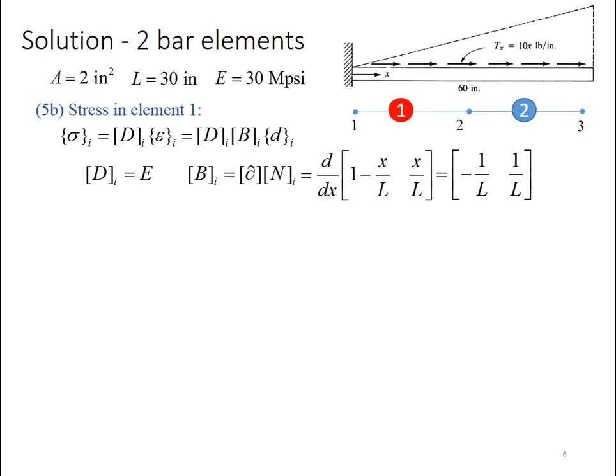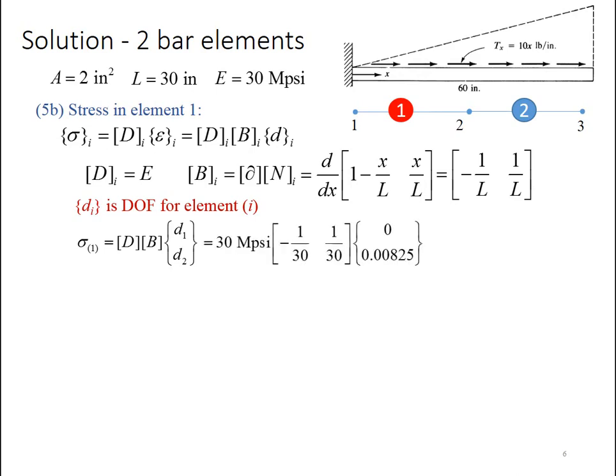Recall here that the d sub i that I'm looking at is the degree of freedom for element i, in this case element 1. We're going to have a different degree of freedom vector for element 2. Specifically, element 2 has degree of freedom 2 and degree of freedom 3 because it deals with node 2 and node 3. So for element 1, I've got D times B times the two degrees of freedom that relate to element 1, d1 and d2. Plugging in the individual terms for this and multiplying them out, I find that the stress in element 1 is 8.25 kpsi.